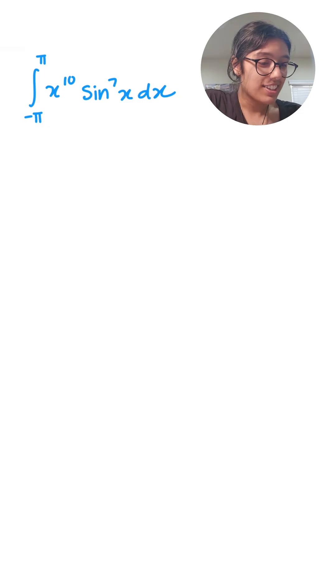Hey everyone, Sakanya here. Today let's take a look at how to solve this problem, which is the integral from negative pi to pi of x to the power of 10 times sine to the power of 7x dx.